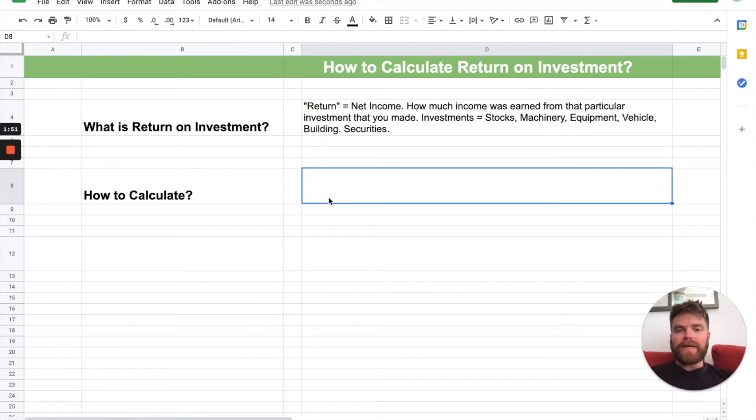Now, how do we calculate that? Well, it's fairly simple. Now, there's lots of formulas out there. We're going to go through the basic calculation here, really. It's just the amount of net income divided by the total asset that you invested in. So, total asset. And again, that could be stocks, machinery, equipment, vehicle, building, securities. There's so many things you can invest in. But it's really just the amount of net income you get back divided by the total assets. So, net income over total assets. And that's basically it.